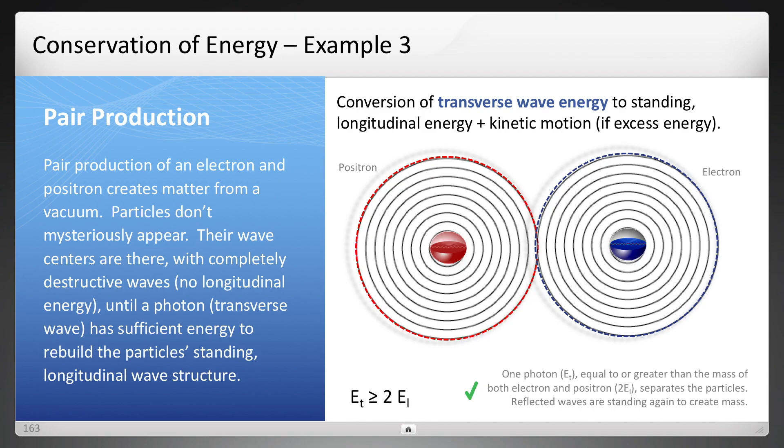Greater just produces more kinetic motion of those particles as they fly away. But it takes at least a photon of two energies of the electron and positron combined. And that illustrates the conservation of energy.